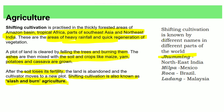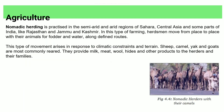Shifting cultivation is known by different names in different parts of the world: Jhumming in Northeast India, Milpa in Mexico, Roca in Brazil, and Ladang in Malaysia.